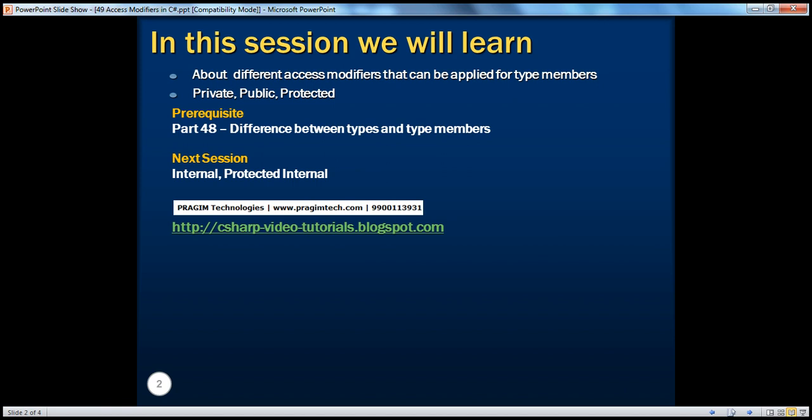In this session, we'll talk about different access modifiers that can be applied for type members. For types themselves, you can only apply two different access modifiers, which we will be talking about in a later session. In this session, we'll also talk about private, public, and protected members in great detail. And in the next session, we'll be talking about the other two access modifiers, internal and protected internal.